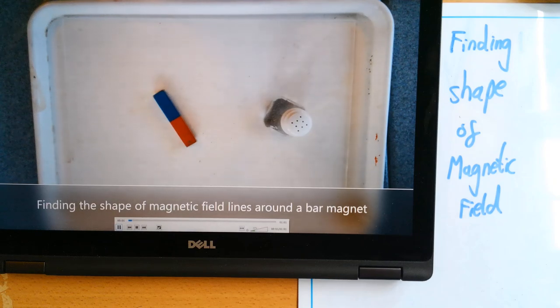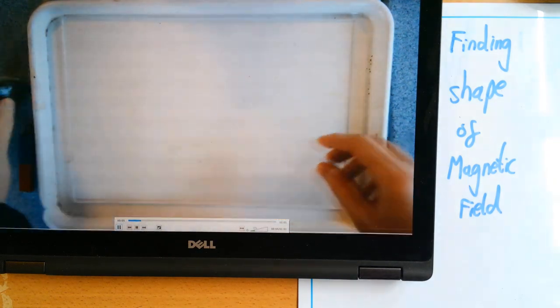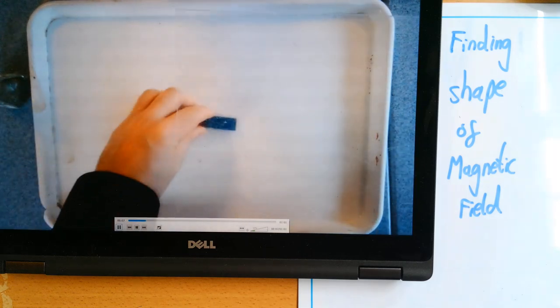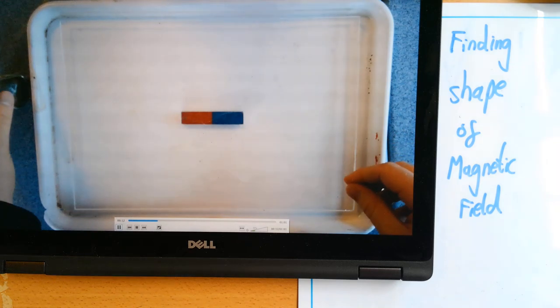First is using iron filings and the next method is using what's called a plotting compass. Now if I play this video, this is finding the shape using iron filings. I've put the bar magnet on a tray there and put a piece of clear perspex on top of that.